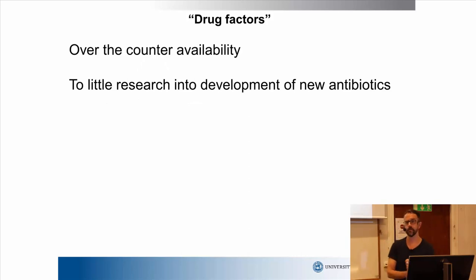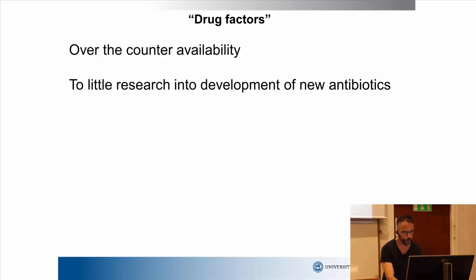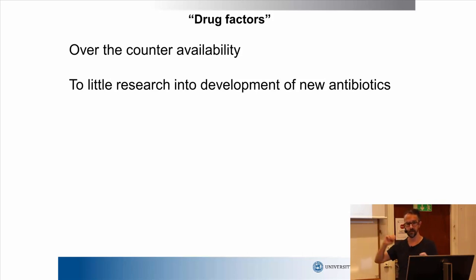Lastly, what I call drug factors. One is the availability of drugs — availability is most likely an important factor explaining overuse of antibiotics. The second is the development of new antibiotics, or new types of treatments that might not be related to antibiotics. So those are four areas with a number of factors that explain why there is overuse of antibiotics and development of antibiotic resistance — all basically from a social point of view.